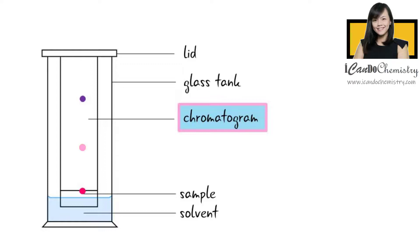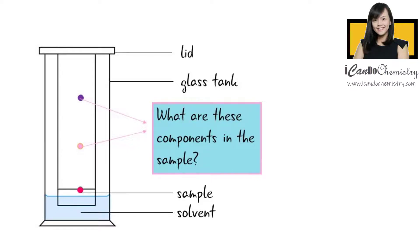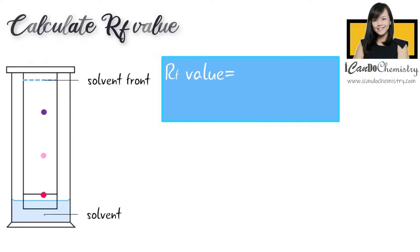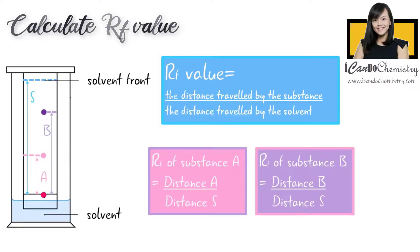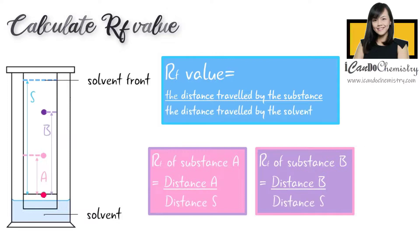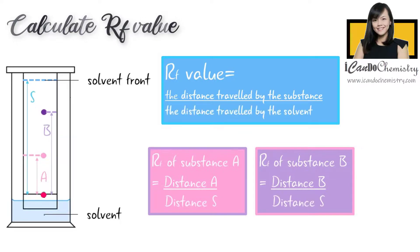The sample that we used contains a mixture of components. We can determine what those components are by calculating the RF value, which is the distance traveled by the substance divided by the distance traveled by the solvent. Different substances in the sample will have their own RF value. We can then identify the substance by comparing its RF value with the RF value of a known substance.